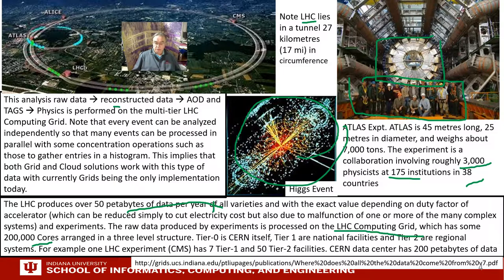The LHC has tiers ranked by location. Tier 0 is CERN itself, where the data is taken. Tier 1 are facilities in Europe, England, or the US, and Tier 2 are regional facilities — you can have any number of those. CMS, a different experiment with similar scale, has 7 Tier 1 and 50 Tier 2 sites, and it succeeds in getting all those people to work together.